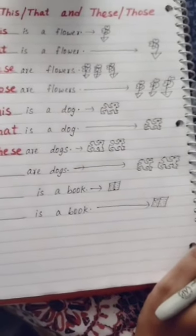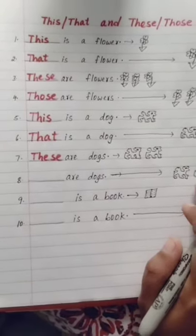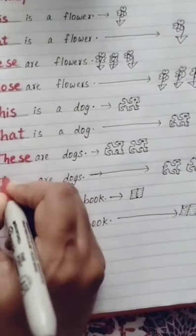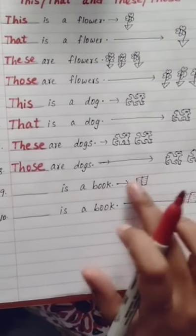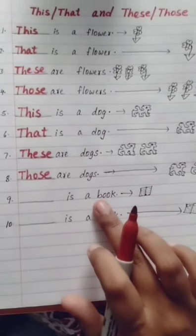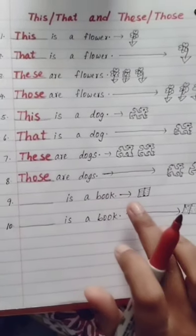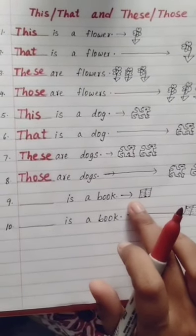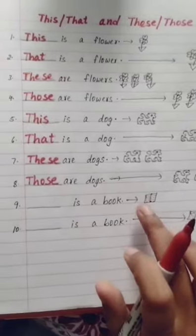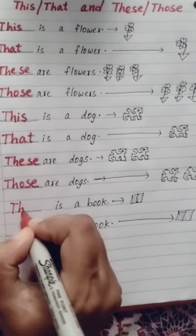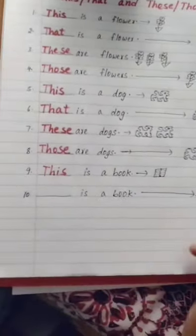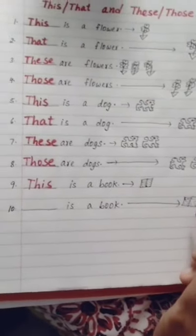Eighth example: blank are dogs. The dogs are far away, so we use 'those' — those are dogs. Ninth example: blank is a book. The book is near and there is only one book — singular — so we use 'this.' Last example: blank is a book. The book is far away, so we use 'that' — that is a book.